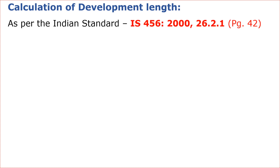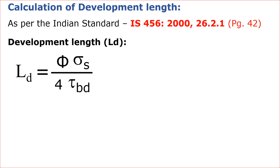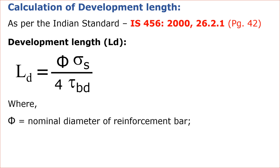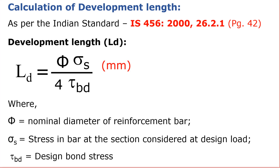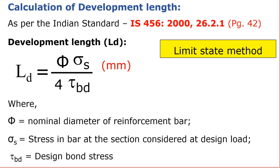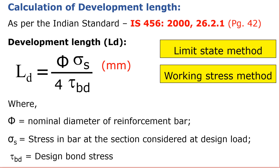Now let us see the calculation of development length as per Indian Standard IS 456:2000 clause number 26.2.1. The development length LD of the bar is given by the following expression: LD = (φ × σs) / (4 × τbd), where φ is the nominal diameter of the reinforcement bar, σs is the stress in the bar at the section considered at design load, and τbd is the design bond stress. This formula is used to calculate the required development length in mm for any given diameter of bar. The same formula is used for the Limit State Method as well as the Working Stress Method; the only change in calculation between both methods is due to the different values of design bond stress.